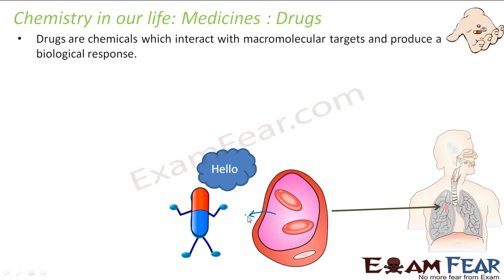If you look at human life, it is nothing but a balance between chemical compounds. The whole body is made of proteins — cells make proteins, proteins make organs, organs make bodies. And the cells themselves are made of nothing but chemical compounds: DNA, RNA, chromosomes — everything is a chemical compound.